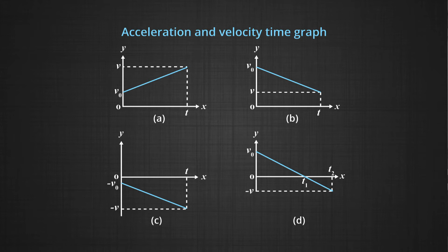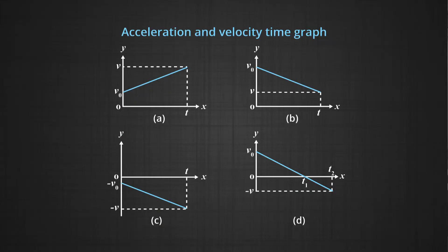In graph C, V0 is negative and the final velocity is even more negative. This is actually a case of positive acceleration because the object is moving in the opposite direction to graph A, and its velocity has increased in magnitude from minus V0 to minus V over the time interval 0 to T, so this is again a case of positive acceleration.